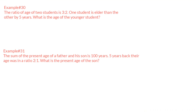The first question: the ratio of ages of two students is 3:2. One student is elder than the other by five years. What is the age of the younger student? Let us consider the two students as E (elder) and Y (younger), and their age ratio is 3:2.